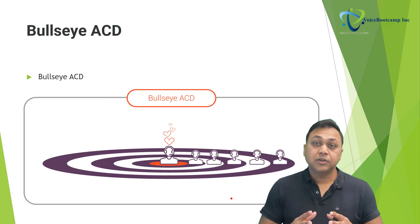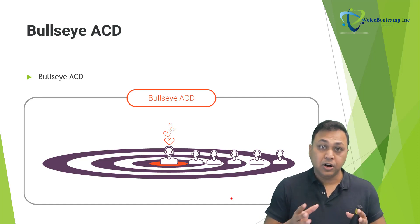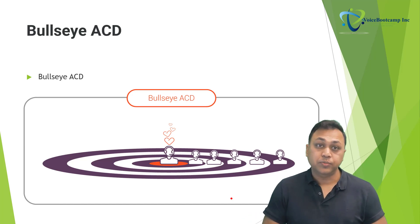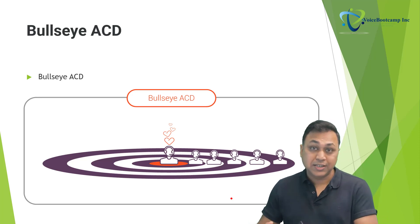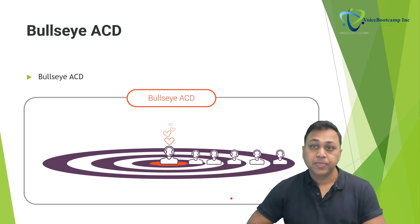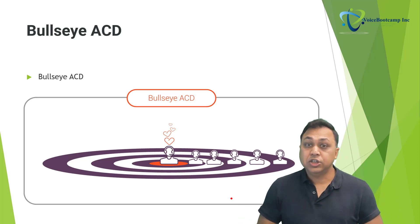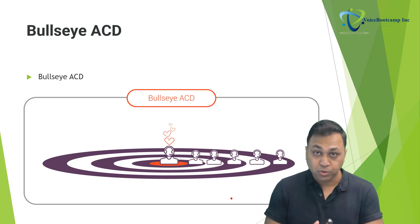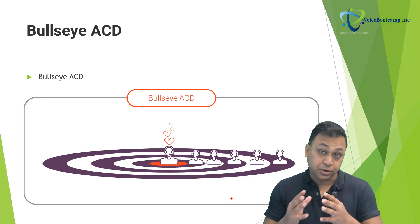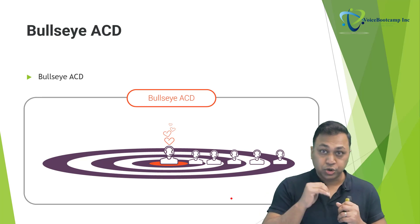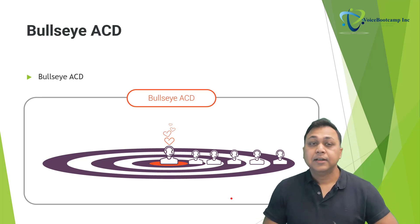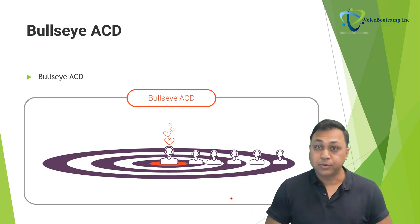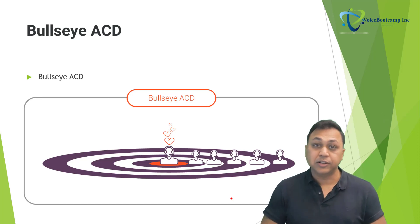Think of a set of concentric rings like the rings on a target or a dartboard. Each ring represents a subset of agents in the queue. It is possible that ring number one has 20 agents, ring number two may have 30 agents, and so on. The innermost ring contains agents with the most desirable skills — people who are most expert in that particular field. The innermost ring contains the most desirable skills and the next ring has agents with the next most desired skills and so on.